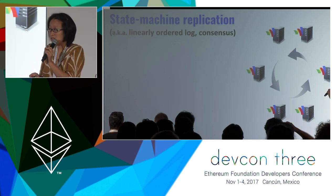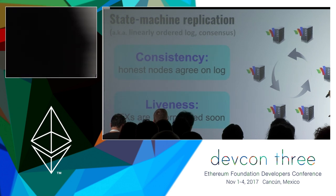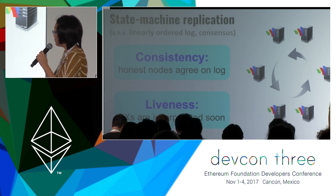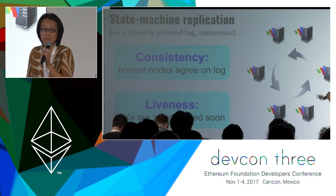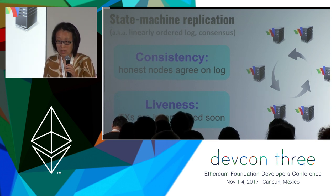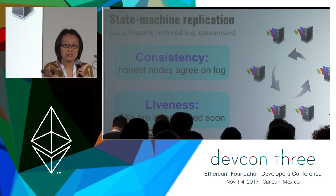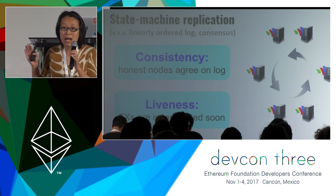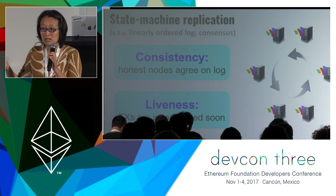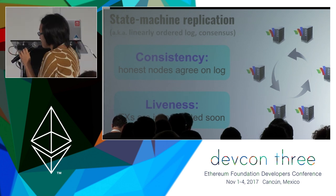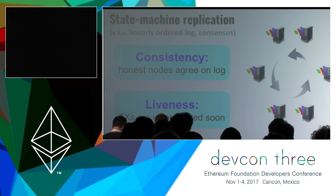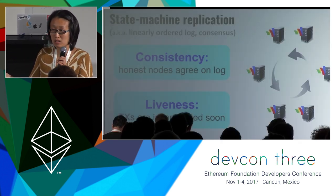There are two very important security properties we care about: consistency and liveness. Consistency says that all honest nodes must agree on the same log. Because the network can have delay, your log has to be a prefix of mine or mine of yours. For liveness: whenever an honest client submits a transaction, we want that transaction to appear in all honest servers' logs very quickly.